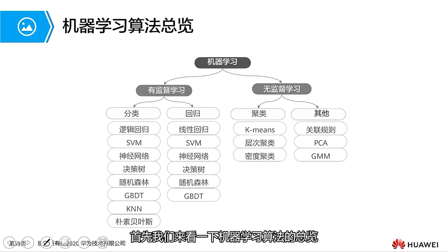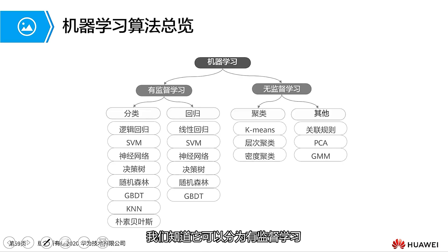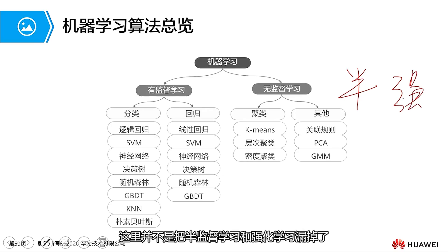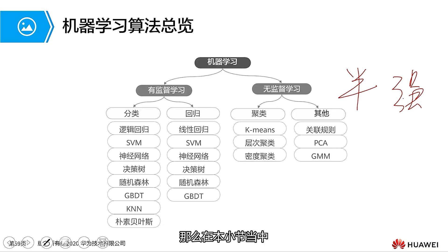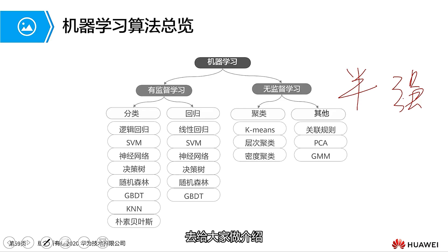Let's take a look at an overview of machine learning algorithms. In the previous machine learning algorithm classification, we know it can be divided into supervised learning, unsupervised learning, semi-supervised learning, and reinforcement learning. It's not that we're missing out on semi-supervised learning and reinforcement learning here, but because they are not particularly common. So in this section, we will discuss common algorithms related to supervised learning and unsupervised learning.